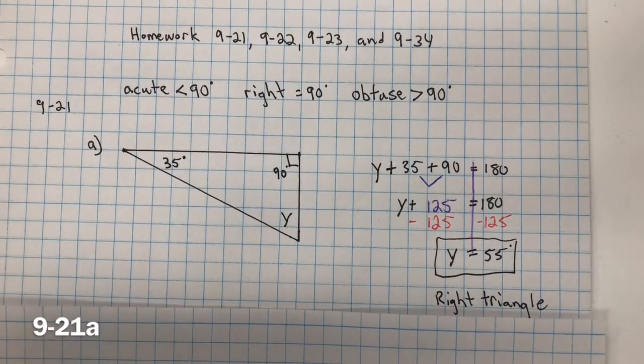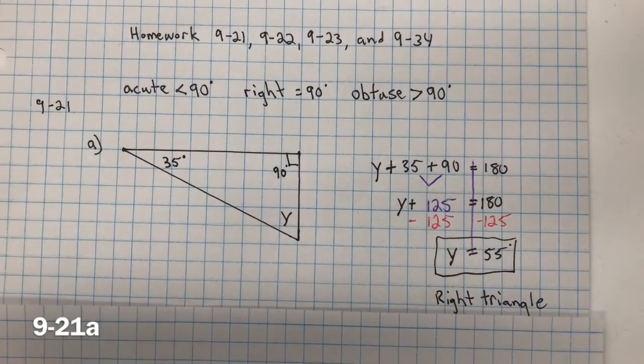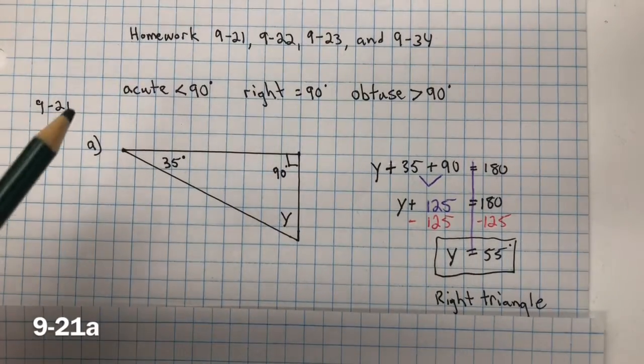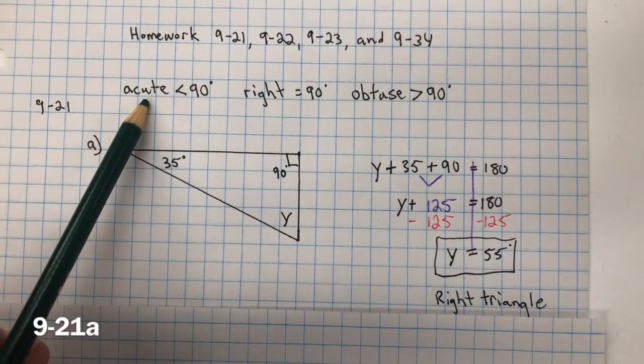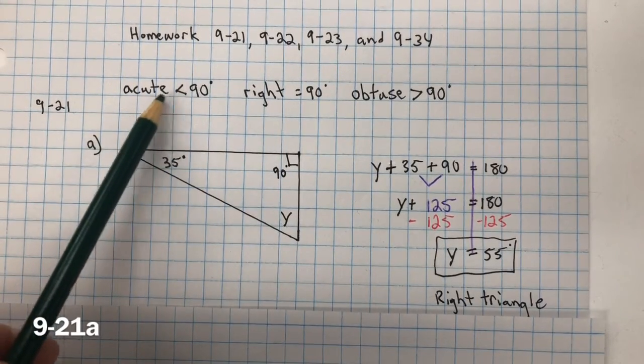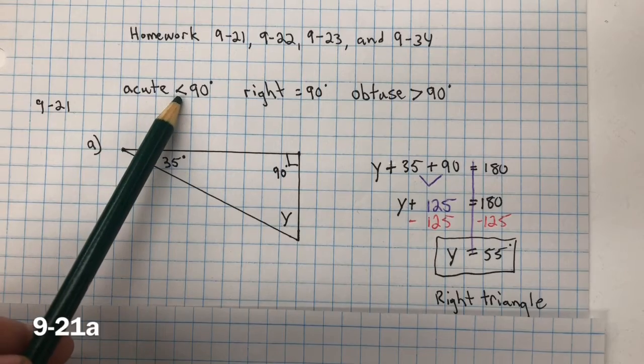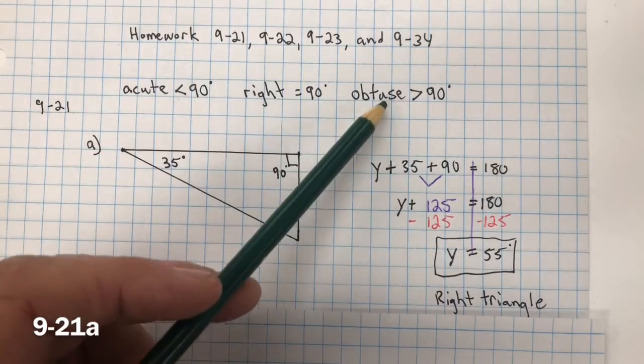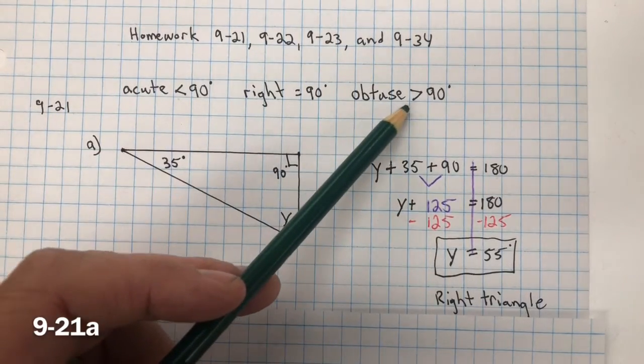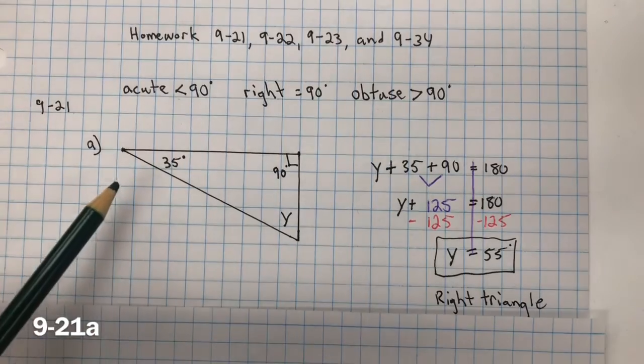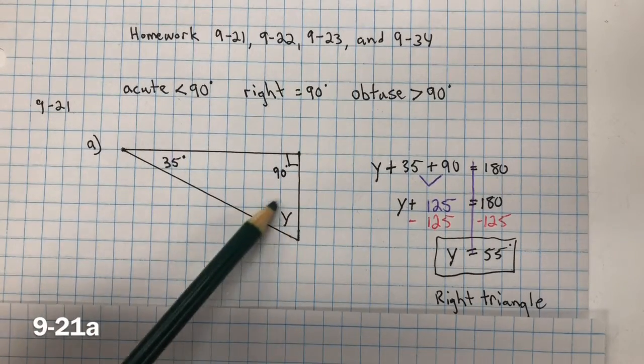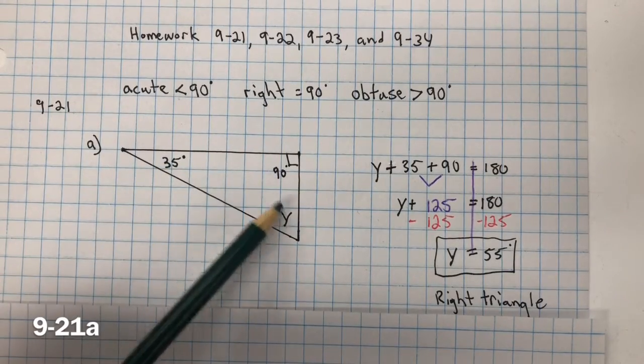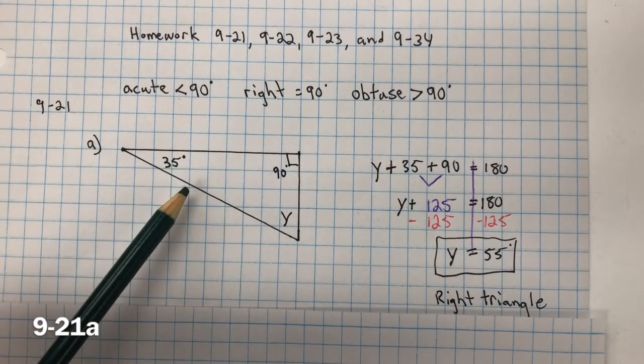In 9-21, you need to find the measure of the missing angle in each triangle and then classify the triangle as acute, right, or obtuse. For acute, the greatest angle measure is less than 90. In a right angle, it's 90 degrees. And in obtuse, the greatest measure is greater than 90. To find the missing measure of a triangle, you have to remember that the sum of the interior angles equals 180 degrees.